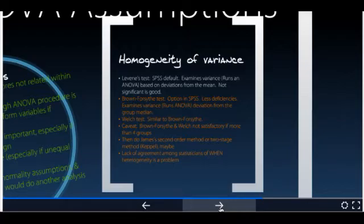There's something called a James second order method or two stage method. If you have four or more groups, you might need to use that. But people don't generally agree, even among statisticians, of when heterogeneity is a problem and how much of a problem that actually is.